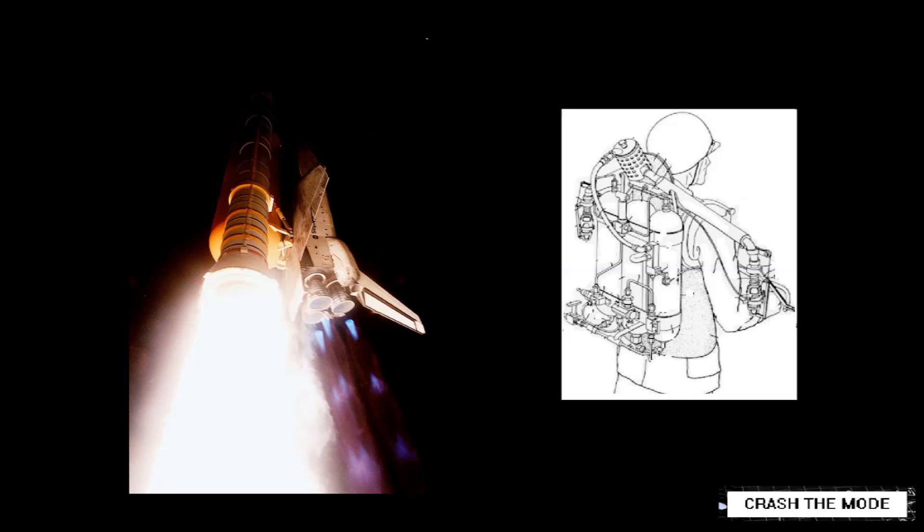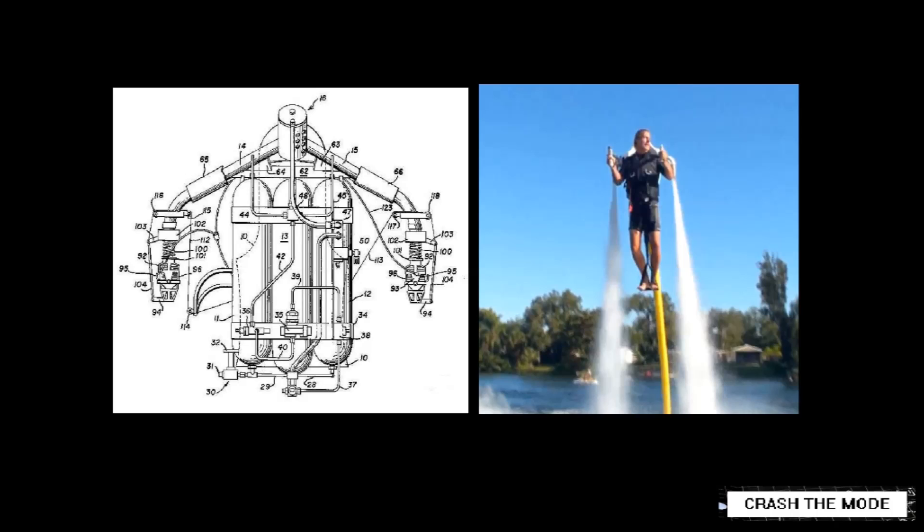Second, the specific impulse. It's the measure of the efficiency of a rocket. Some people like to think of it as being like miles per gallon for rockets, but to be specific it's the ratio of the amount of thrust you get from the rocket to the weight flow of the propellant. You want as high a specific impulse as possible, but you usually have to trade this off for things like high thrust.